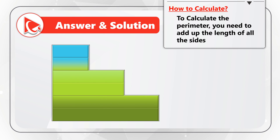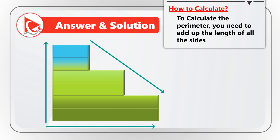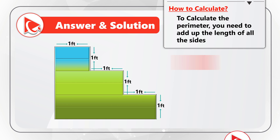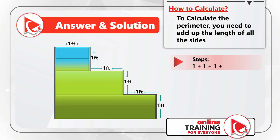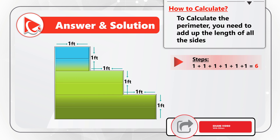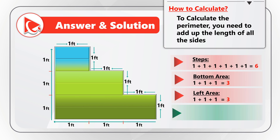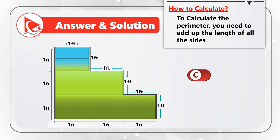In our object, we're presented with steps that have measurements. This object also has solid sides at the bottom and on the left. The top sides of the steps are all one foot, and the height of every step is also one foot. So the steps contribute six sides of one foot each, totaling six feet. The bottom area, based on measurements, is three feet, and the left area is also three feet. So the total perimeter is six plus three plus three equals 12 feet. The correct answer here is choice C, 12 feet.